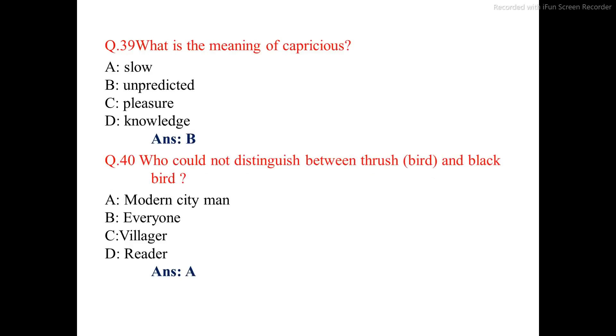Question number 39. What is the meaning of capricious? The correct answer is option B: unpredicted.